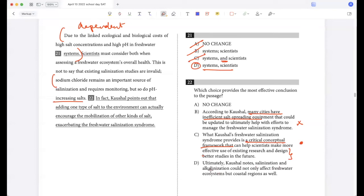Ultimately, Kaushal noted salinization and alkalinization could not only affect freshwater but coastal regions. Okay, now this is introducing a new idea, so I don't like this. He points out that adding one type of salt can actually encourage the mobilization of other kinds of salt. This seems relevant to the previous sentence, but it's not a good concluding statement, right? Because the main thing about a concluding statement is that it should kind of wrap up what the whole passage was saying. So I would go with C over A, because C sounds more of a positive thing on the entire freshwater framework. So yeah.